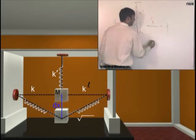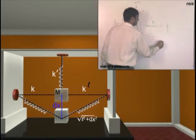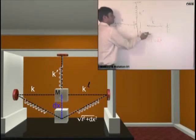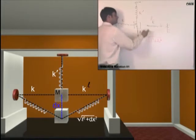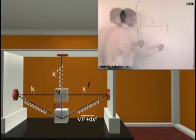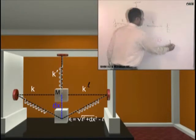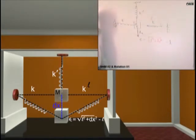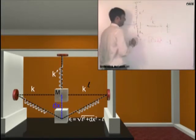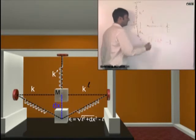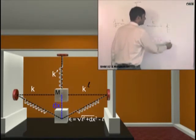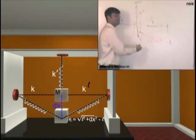So this will be root of l square plus dx square. Now what is the extension in this? This minus this, am I right? Extension. Do you understand this? This is the new length of this spring, this point has reached here, and this is the original length l. So the new length minus original length is the extension. Do you understand this?